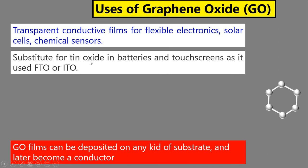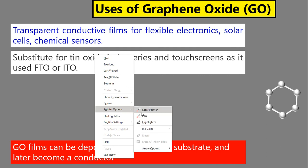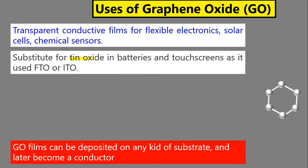Graphene oxide is a substitute for tin oxide. In transparent conducting electrodes, we currently use FTO (fluorine-doped tin oxide) and ITO (indium-doped tin oxide). These are used as glass or plastic substrates but are very expensive. Graphene oxide can serve as a substitute for these FTO and ITO electrodes in batteries, touch screens, and similar devices.